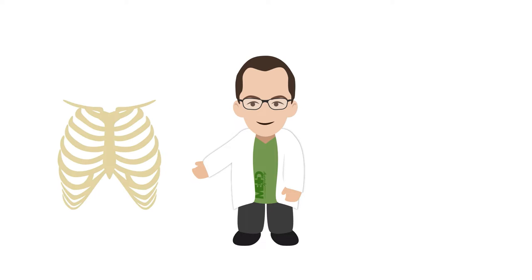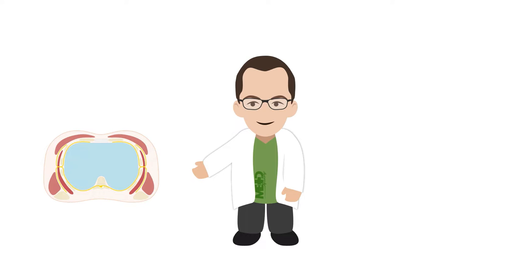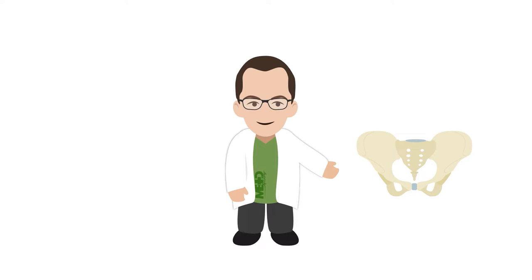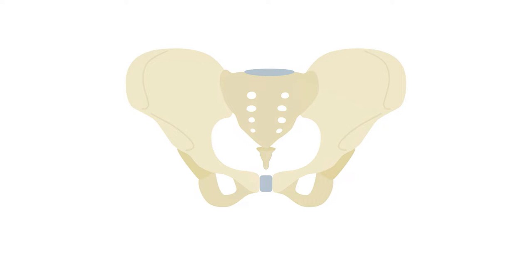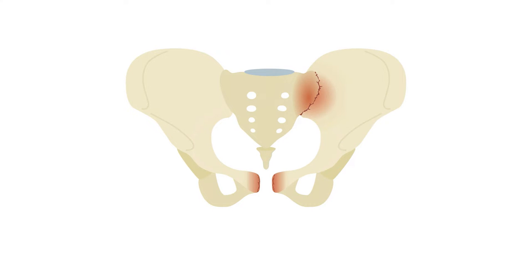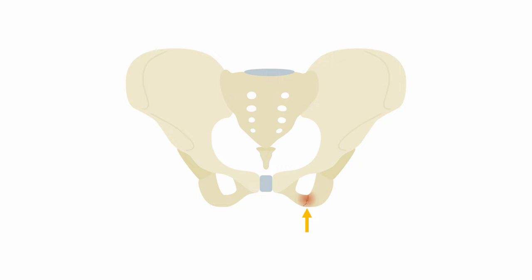Now that we have covered the ribs, spine, and body wall, we are ready to tackle the pelvis. Pelvic fractures are common in high-velocity trauma, and the pelvis has predictable patterns of injury due to its ringed structure. It is helpful to think of pelvic fractures like breaking a pretzel — you cannot break it in just one place.